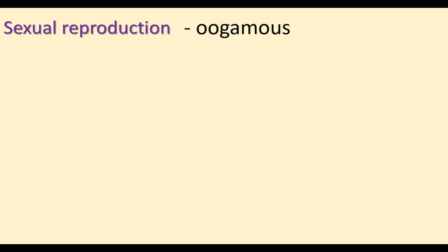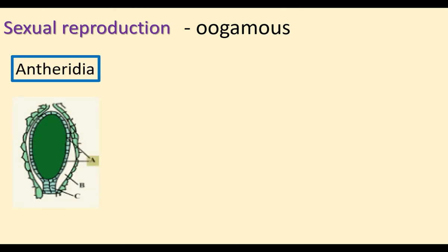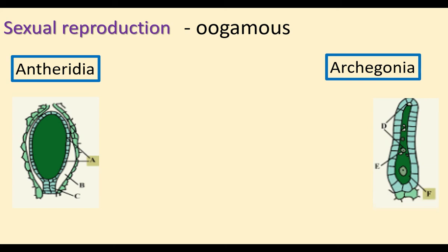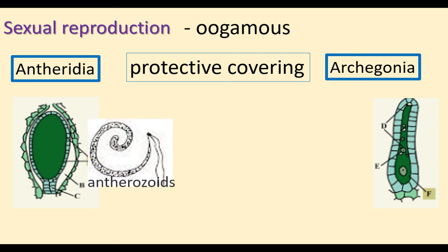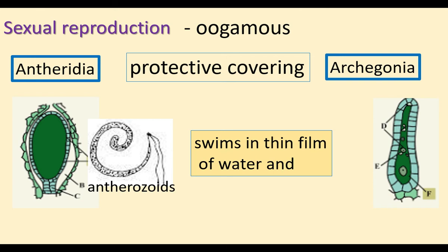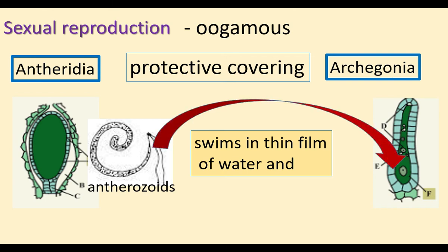Sexual reproduction in bryophytes is oogamous, with separate male and female gametes. Antheridia are the male reproductive organs and archegonia are the female reproductive organs. Antheridia produce biflagellate antherozoids. Both antheridia and archegonia are protected by a multi-layered covering. Antherozoids swim in a thin film of water on the surface of the thallus, reach the archegonium, and fertilize the egg — so fertilization requires water.